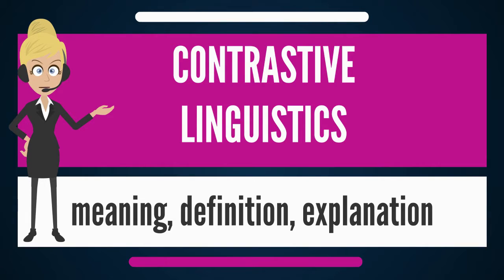Contrastive linguistics, since its inception by Robert Lado in the 1950s, has often been linked to aspects of applied linguistics — for example, to avoid interference errors in foreign language learning, as advocated by Di Pietro (1971); see also Contrastive analysis.